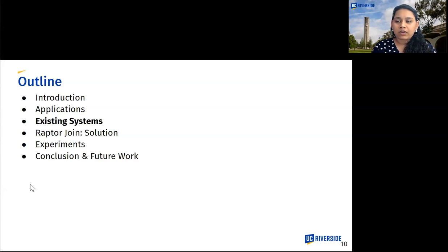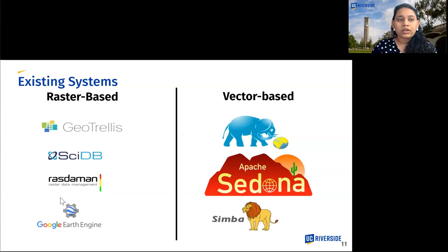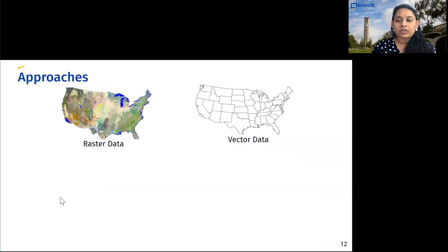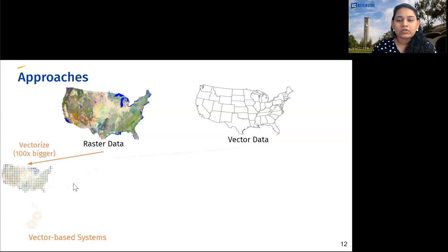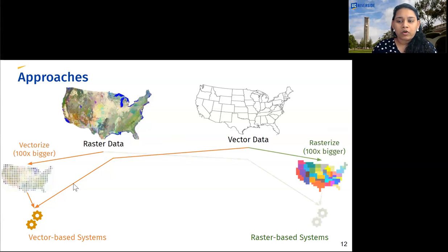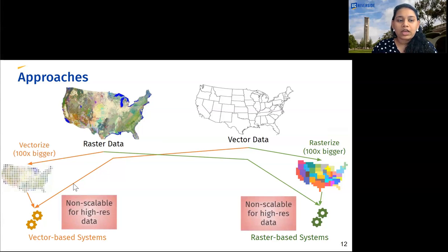I will now talk about existing systems and why combining raster and vector data is computationally expensive. The difference in representation makes it difficult to combine them, which is also why existing systems focus on either raster data or vector data. A few examples of raster-based systems include GeoTrellis, PsyDB, Rasterman, and Google Earth Engine, while vector-based systems include Spatial Hadoop, Apache Sedona, and Simba. The vector-based approach vectorizes the raster data before performing a vector join, while the raster-based approach rasterizes the vector data before performing a raster-raster join. The conversion of data from one form to another is computationally expensive and leads to a huge increase in data size, making these approaches non-scalable for high-resolution data.